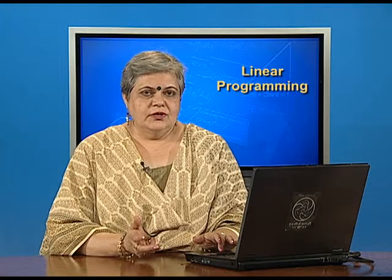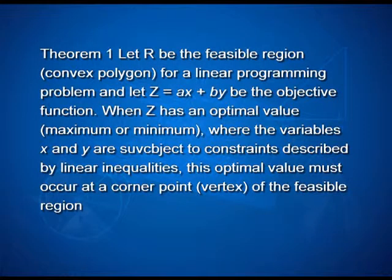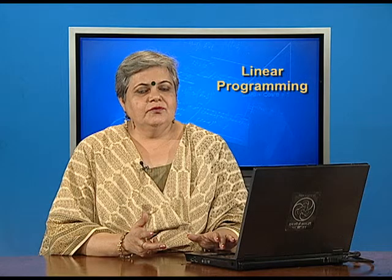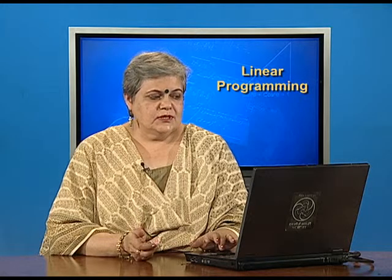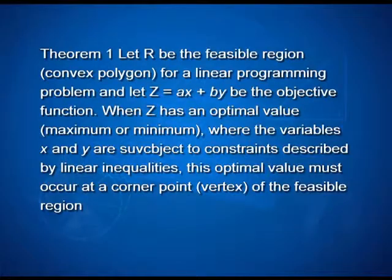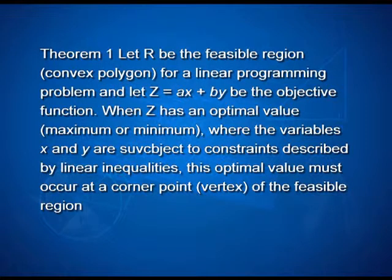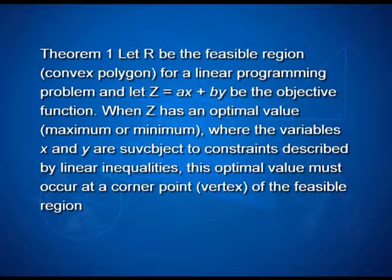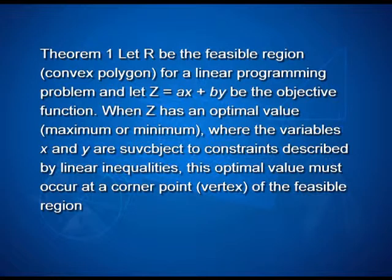There are two major theorems that work to give us the solution of a Linear Programming problem, and they are of course stated without proof in your textbooks. Theorem 1 says that if R is the feasible region for a Linear Programming problem and Z equals Ax plus By is the objective function, then Z has an optimal value — maximum or minimum — where the variables x and y are subject to constraints described by linear inequalities. This optimal value must occur at a corner point, also known as the vertex, of the feasible region.